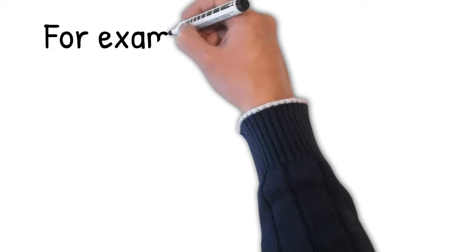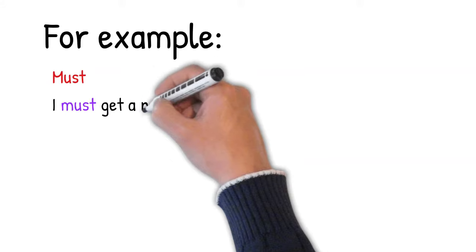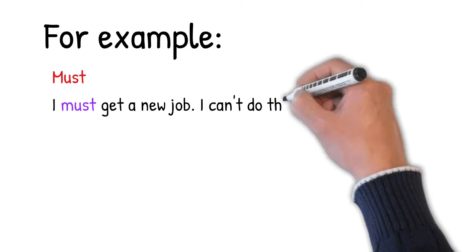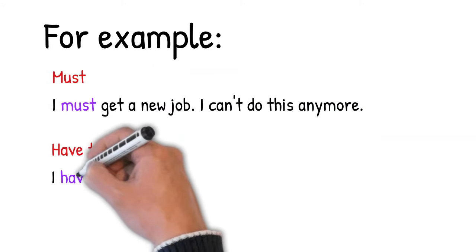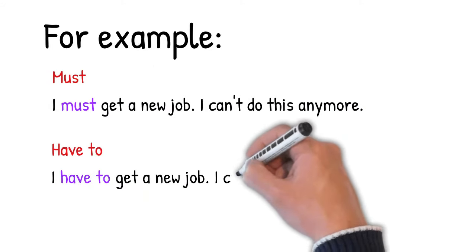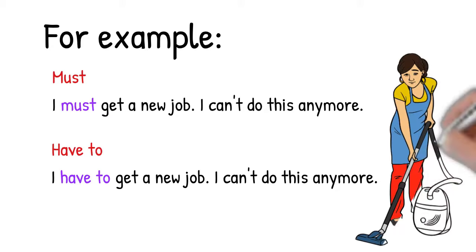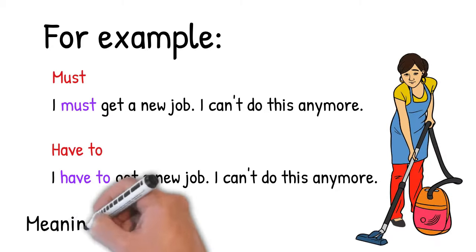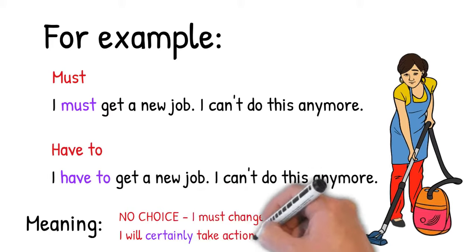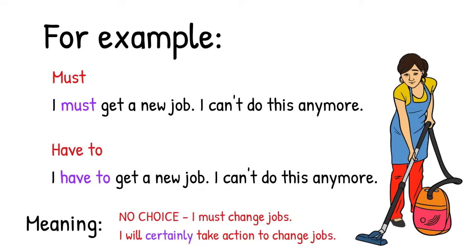Let's look at an example sentence. Must: 'I must get a new job. I can't do this anymore.' Or have to — notice how the pronunciation changes: 'I have to get a new job. I can't do this anymore.' So the meaning is there is no choice. I must change jobs; I will certainly take action to change jobs.